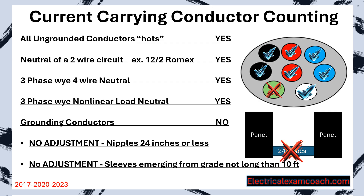Just a quick recap: we're going to count all ungrounded hots, we're going to count most neutrals, we're not going to count grounding conductors. There are no adjustments for nipples 24 inches or less, and there are no adjustments for sleeves emerging from grade not longer than 10 feet.